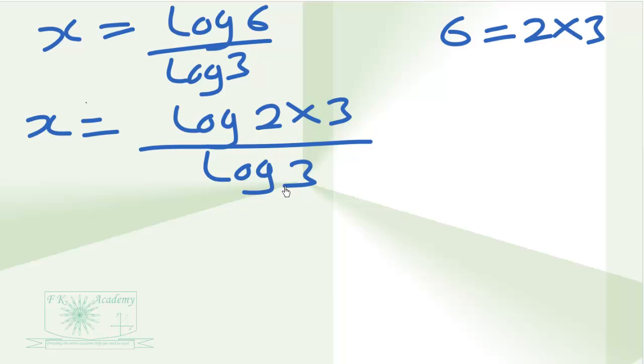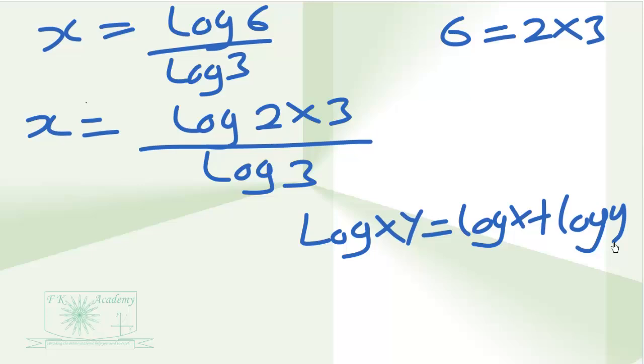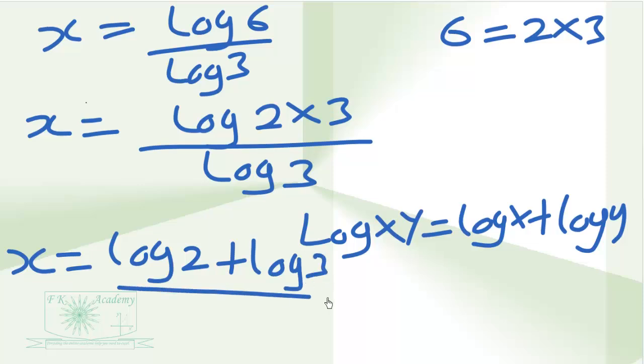So we can now apply the product rule of logarithm. Log x times y is equal to log x plus log y. So this gives us x to be equal to log 2 plus log 3 divided by log 3.